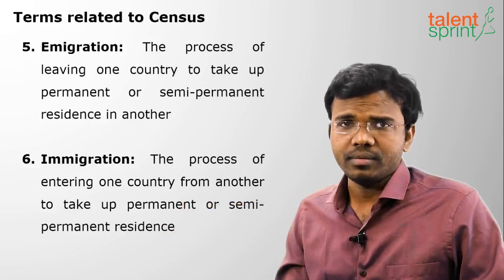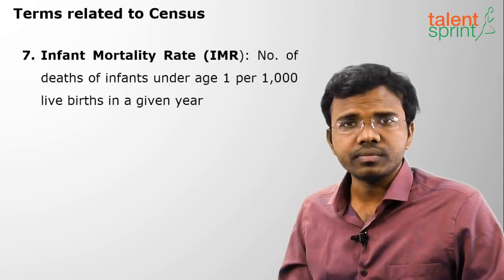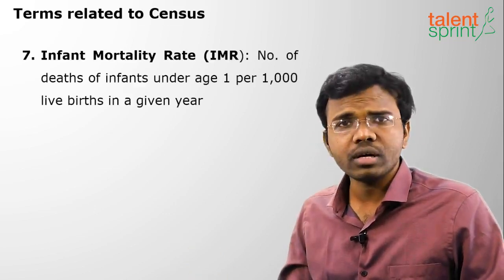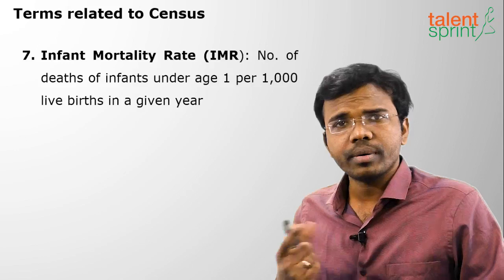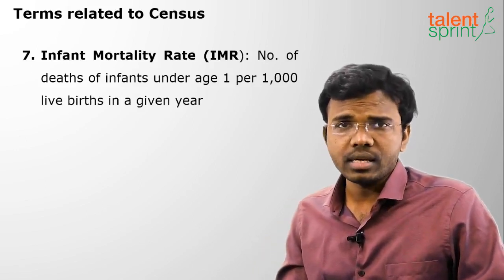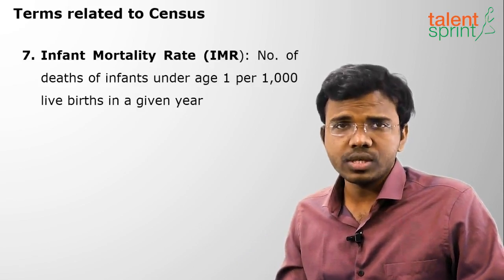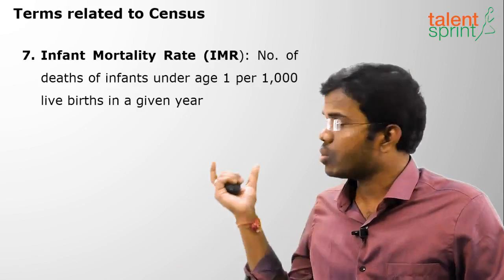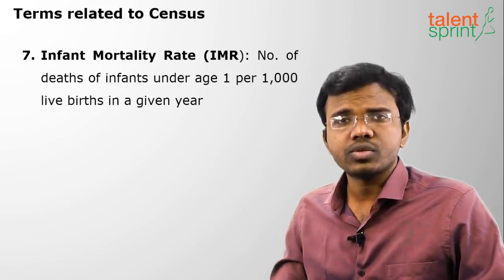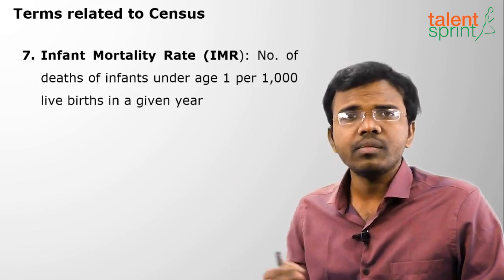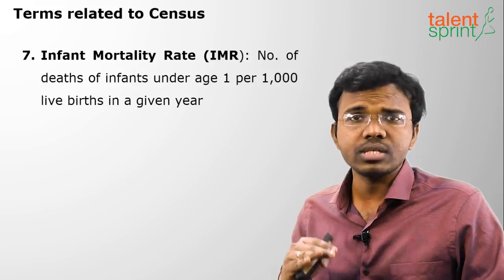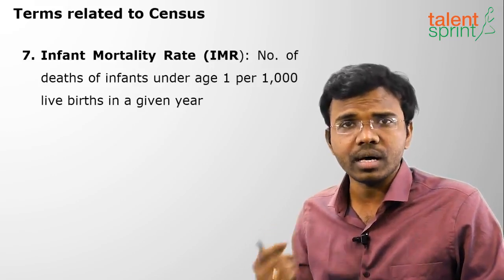The next term is infant mortality rate. An infant is a person up to one year of age, and mortality means dying. So infant mortality rate is the number of deaths of children under the age of one per thousand live births. Suppose a thousand people are born and 20 are dying, so 20 per thousand is the infant mortality rate. It should be less — a lower IMR denotes development of the country.